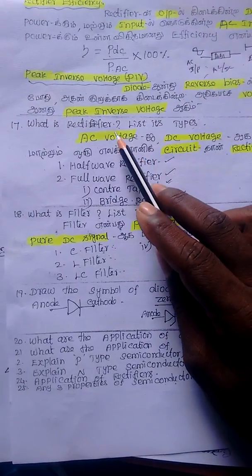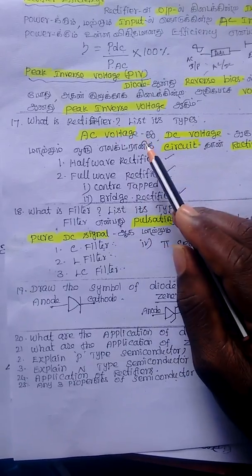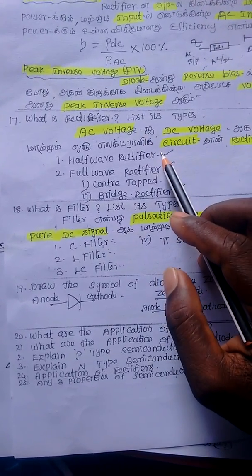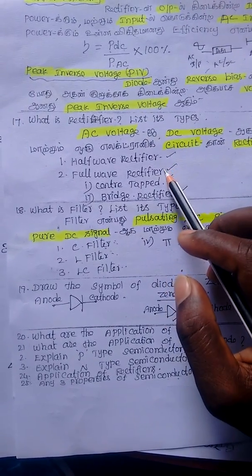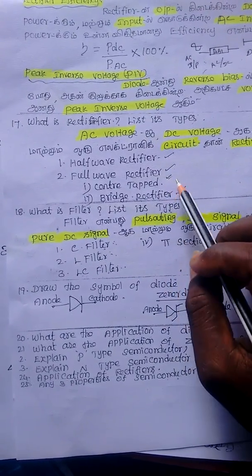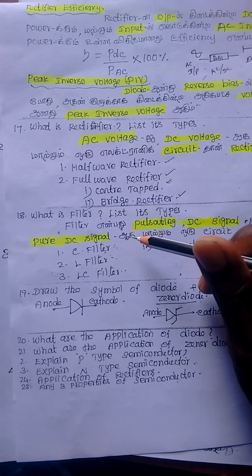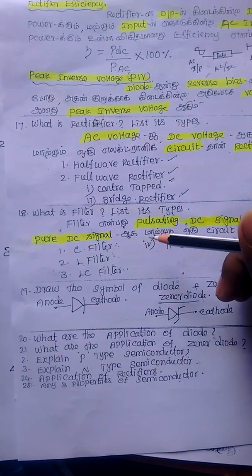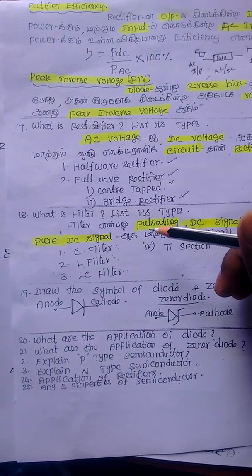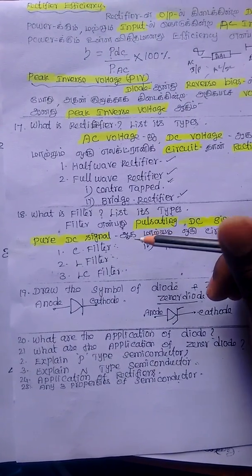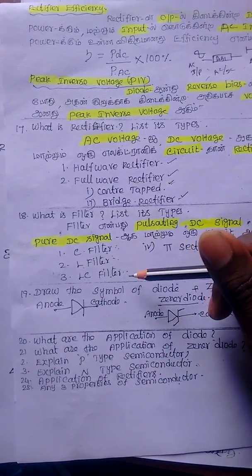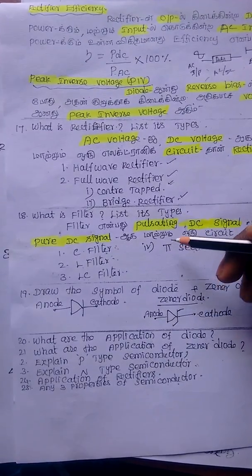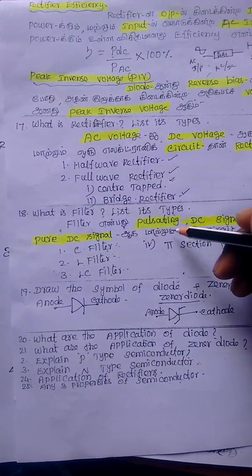In a rectifier, if you have 3 types — Half Wave Rectifier, Full Wave Rectifier, Bridge Rectifier — there are 4 filter types: Capacitor Filter, Inductor Filter, Capacitor plus Inductor Filter, and Pi Filter.